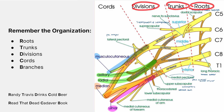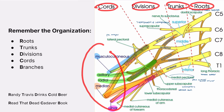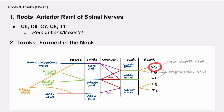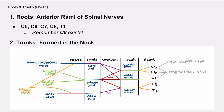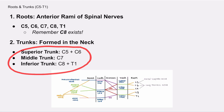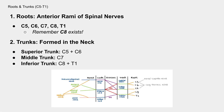Roots, trunks, divisions, cords, and branches — this sequence is the foundation for everything else. The roots of the brachial plexus run from C5 to T1, and remember that C8 exists. These combine to form the three trunks in the posterior triangle of the neck: superior, middle, and inferior. Knowing which roots form which trunk is crucial, especially for the clinical correlations. The superior trunk is formed by C5 and C6, the middle trunk is a continuation of C7, and the inferior trunk is formed by C8 and T1.